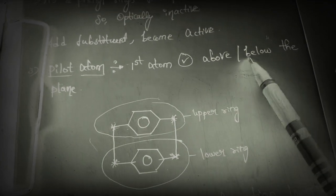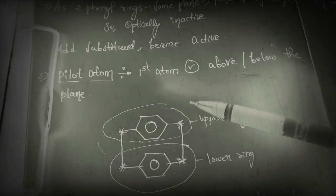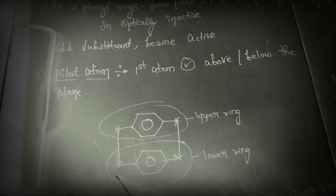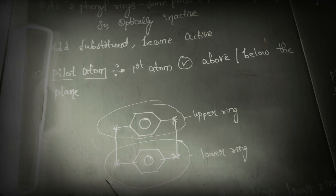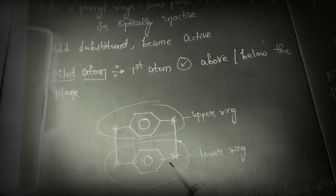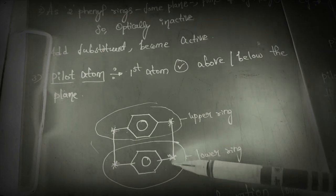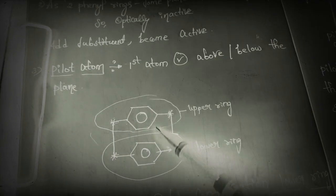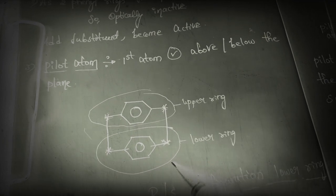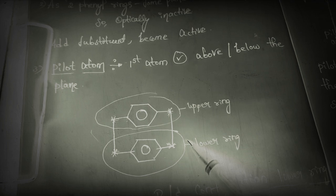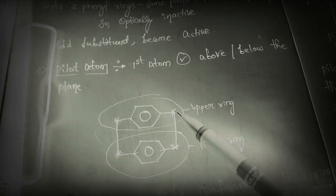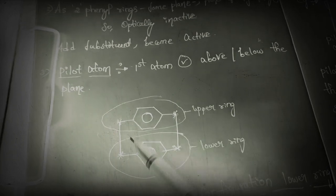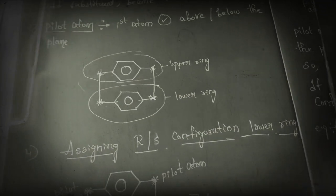For this lower ring, the first atom present above the plane — if we consider the upper ring, this region becomes below the plane. So for the upper ring, these two atoms are pilot atoms; for the lower ring, these two atoms present above the plane become pilot atoms. We just consider upper ring and lower ring, then observe the first atom present above the plane — that becomes the pilot atom.